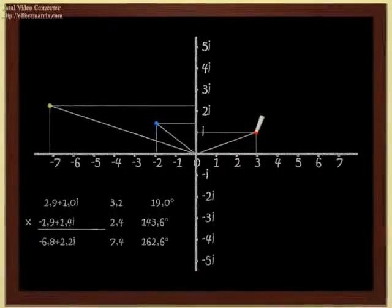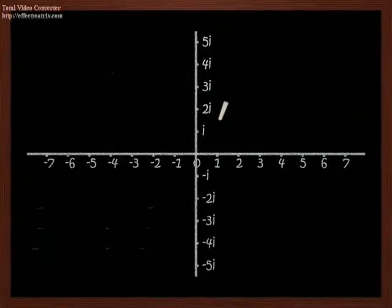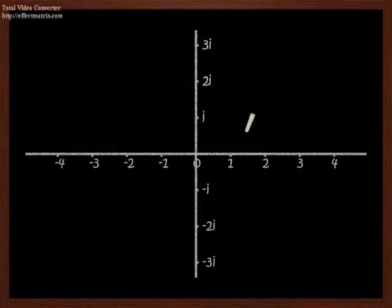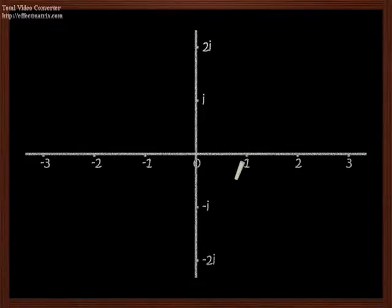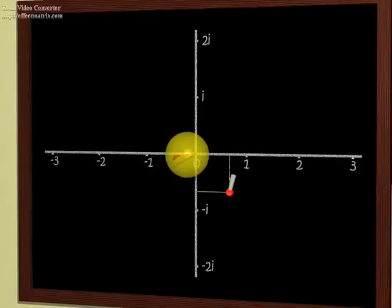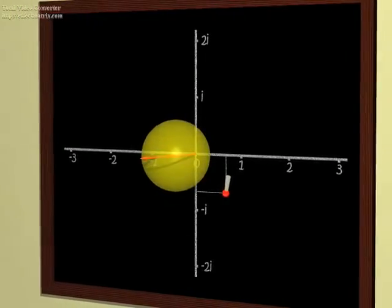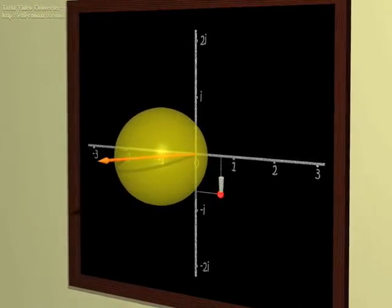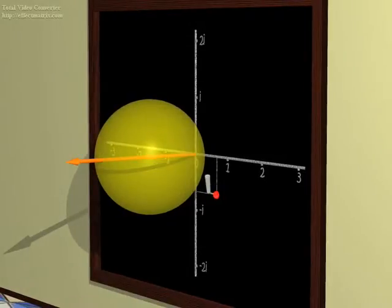Let's finish up our first encounter with complex numbers with the stereographic projection. Consider a sphere tangent to the board at the origin. Using stereographic projection, to each point on the board, that is, to each complex number, corresponds a point on the sphere.